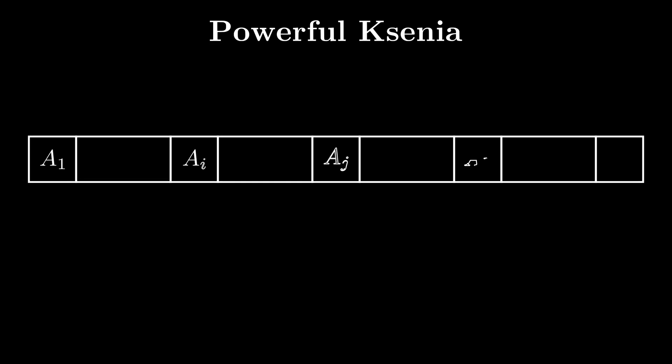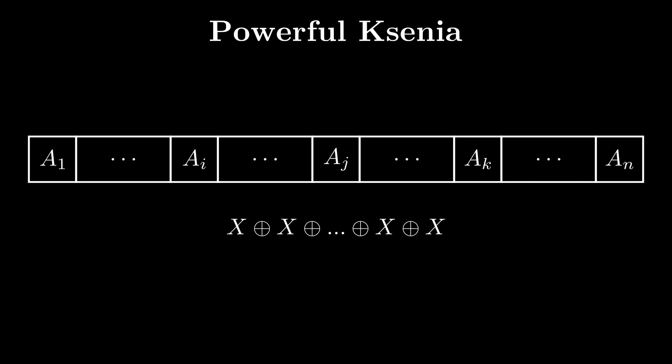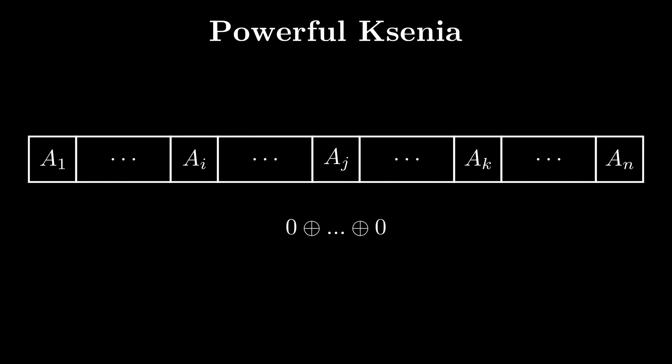Now let's look at what happens when n is even. Since all elements at the end need to be equal to each other, the XOR of all elements at the end is equal to 0, because the XOR of an even number of equal elements is 0. Let's also show that performing the given operation doesn't change the total XOR of all elements in the array.